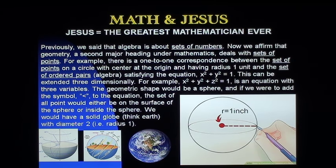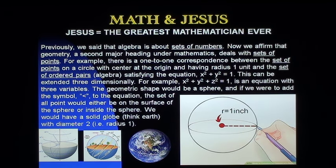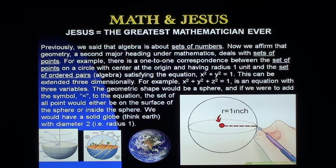This can be extended three-dimensionally. For example, x squared plus y squared plus z squared equals one is an equation with three variables. The geometric shape would be a sphere. And if we were to add the symbol 'less than' to the equation, the set of all points would either be on the surface or inside the sphere — we would have a solid globe. Think: earth with diameter two and radius one.